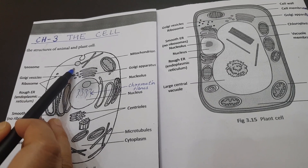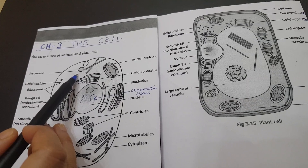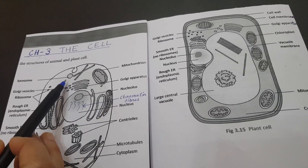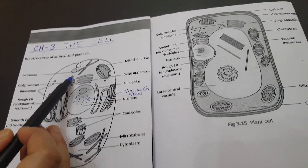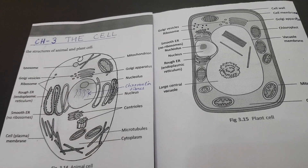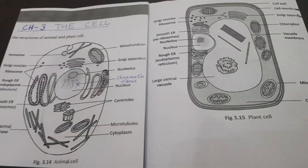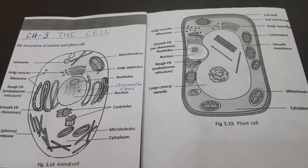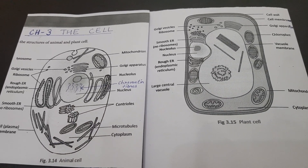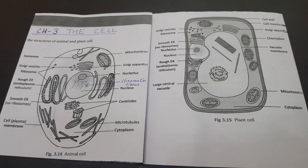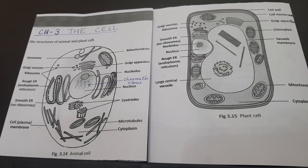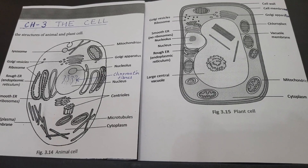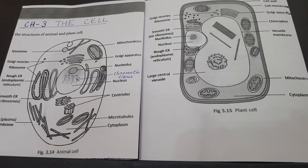Lysosomes destroy any foreign material which enters the cell, such as bacteria and viruses. They also remove worn-out and poorly working cellular organelles by digesting them. Lysosomes are also known as the suicide bags of a cell, because during breakdown of the cell structure, when the cell gets damaged, lysosomes burst, enzymes come out and digest their own cell.